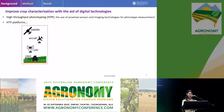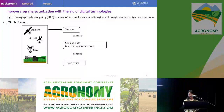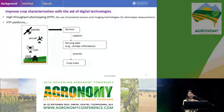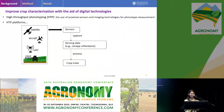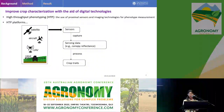Nowadays we have a lot of platforms that can be used for high-throughput phenotyping, from ground-based robots to satellites. The general application pipeline for high-throughput phenotyping involves using sensors mounted on different platforms to collect sensing data which can describe the crop growth status, and then we try to extract the crop traits from the sensing data.